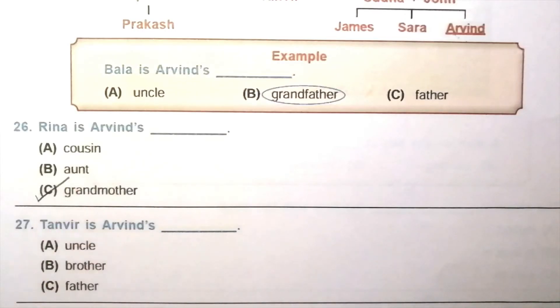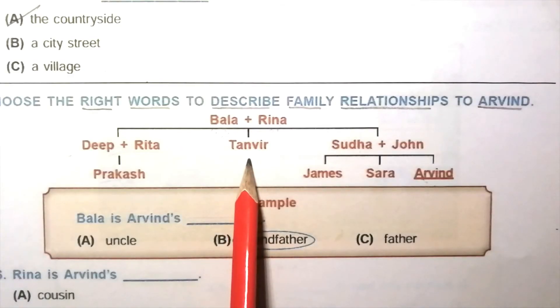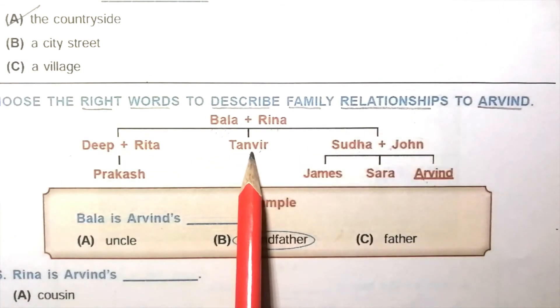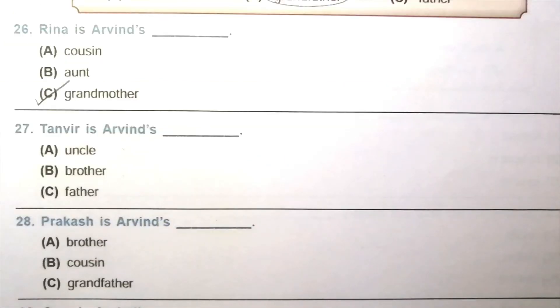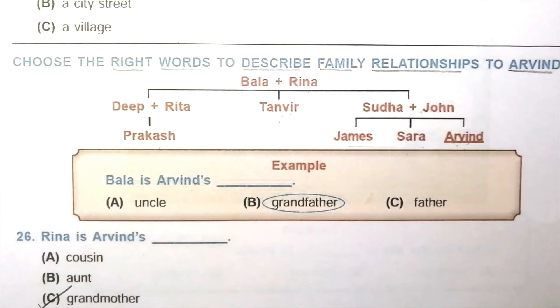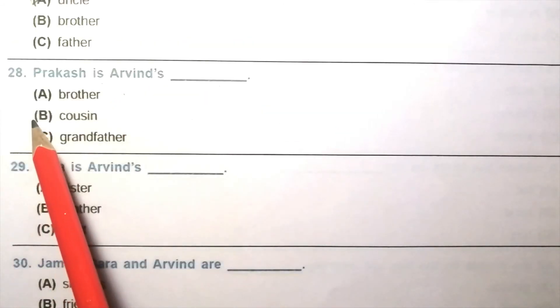Question 27: Tanvir is Arvind's blank. Uncle, brother, father. Tanvir is here. Tanvir is Arvind's parent's sibling. So Tanvir is uncle of Arvind. The answer is A, uncle. Question 28: Prakash is Arvind's blank. Brother, cousin, grandfather. Prakash is also a third generation person but not Arvind's sibling. So Prakash is Arvind's cousin. The answer is B, cousin.